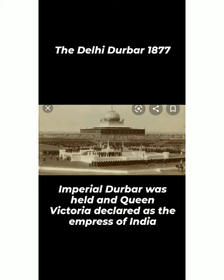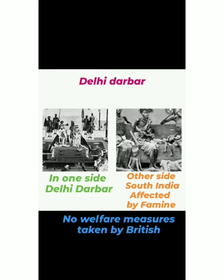The last point is the Delhi Darbar, held in 1877. It was an Imperial Darbar where Queen Victoria was declared as the Empress of India — a subject we have already studied in the previous chapter on the Revolt of 1857. This Darbar was held in Delhi with great pomp, and all European guests came to celebrate. But on the other side, South India was affected by a famine, and people were suffering greatly while the British were least bothered, celebrating the Delhi Darbar.